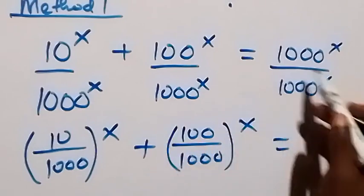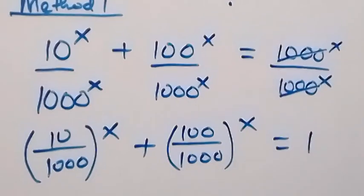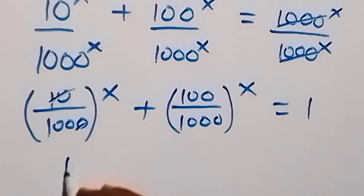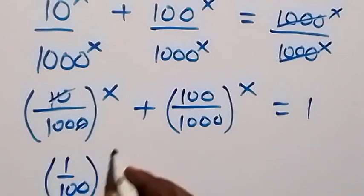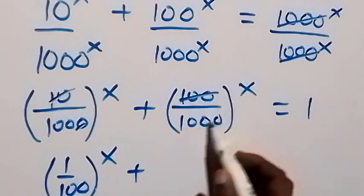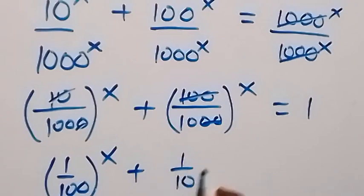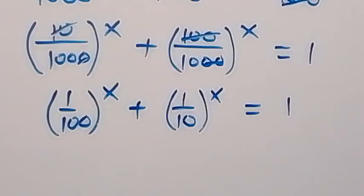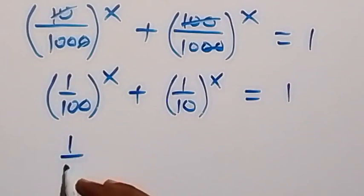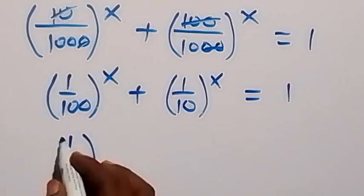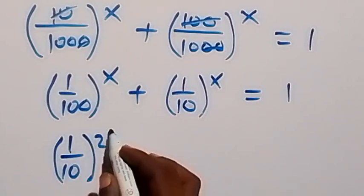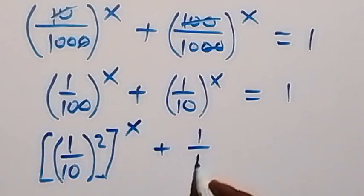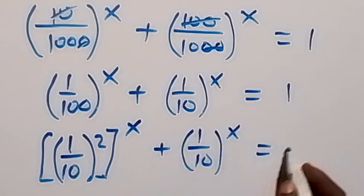Then equals to 1 — this cancels out, leaving 1. From here, 10 over 1000: we cancel one of the zeros, leaving 1 over 100 raised to power x. Then plus 100 over 1000: canceling zeros, we get 1 over 10 raised to power x, equals to 1. We can write 1 over 100 as 1 over 10 all squared, so that's 1 over 10 all squared raised to power x, plus 1 over 10 raised to power x, equals to 1.